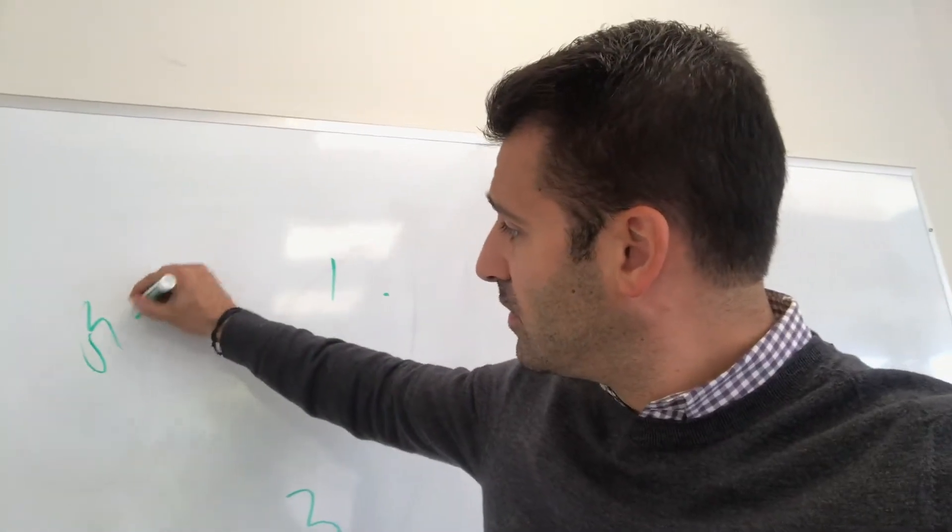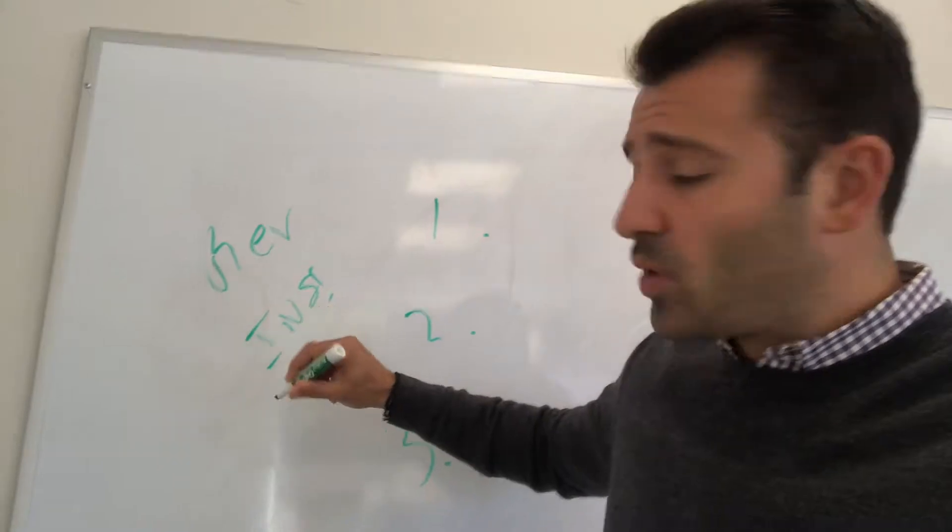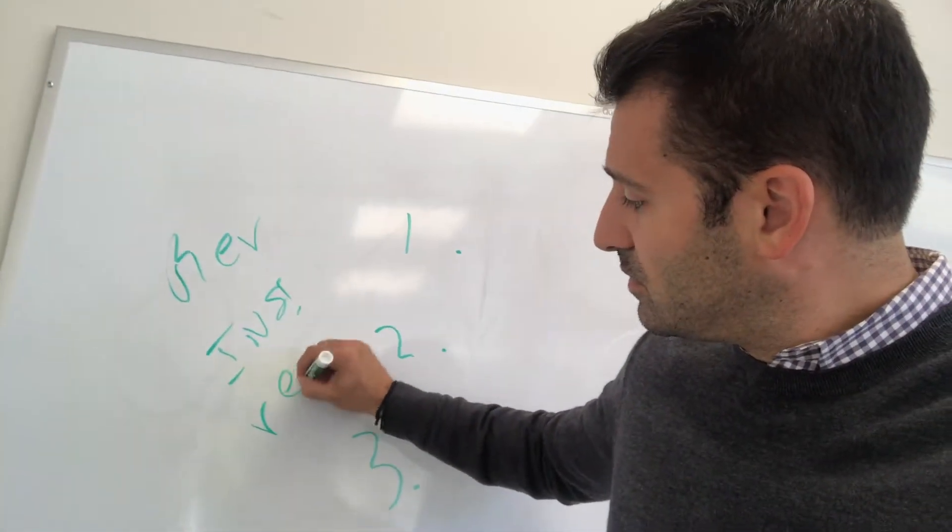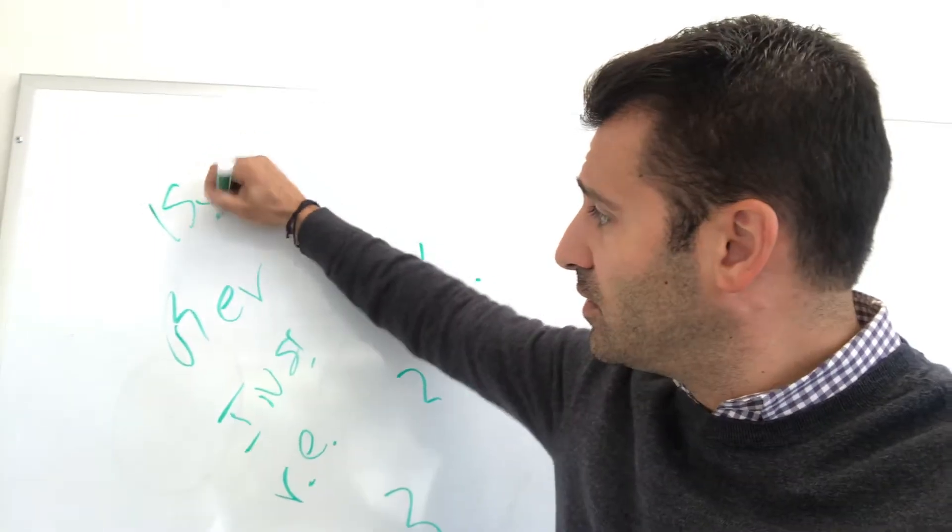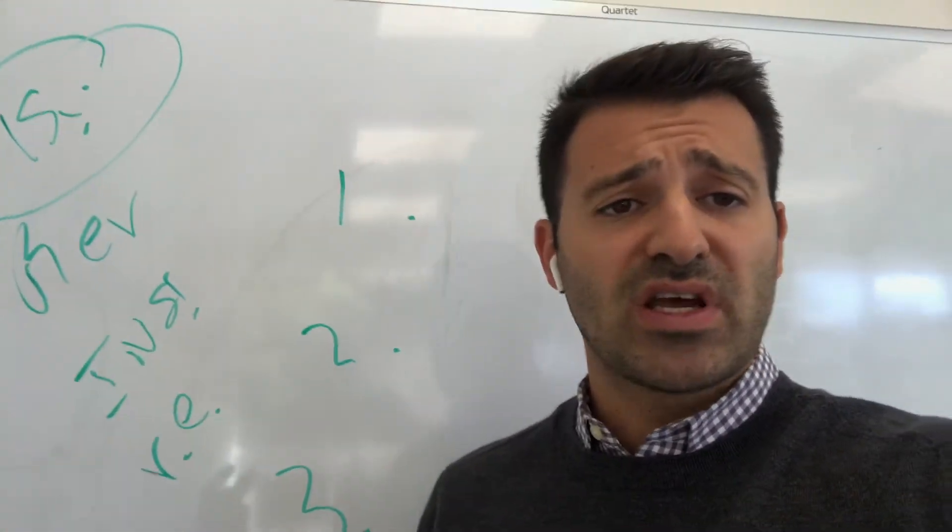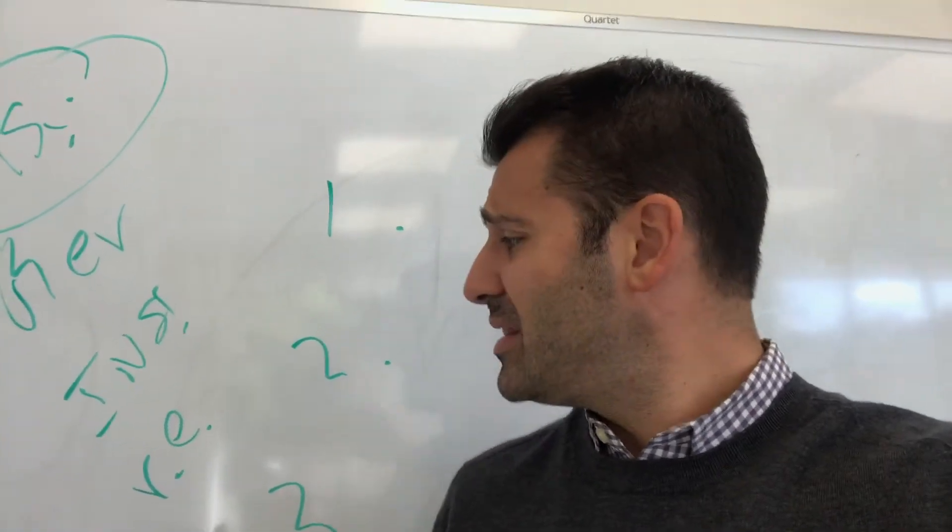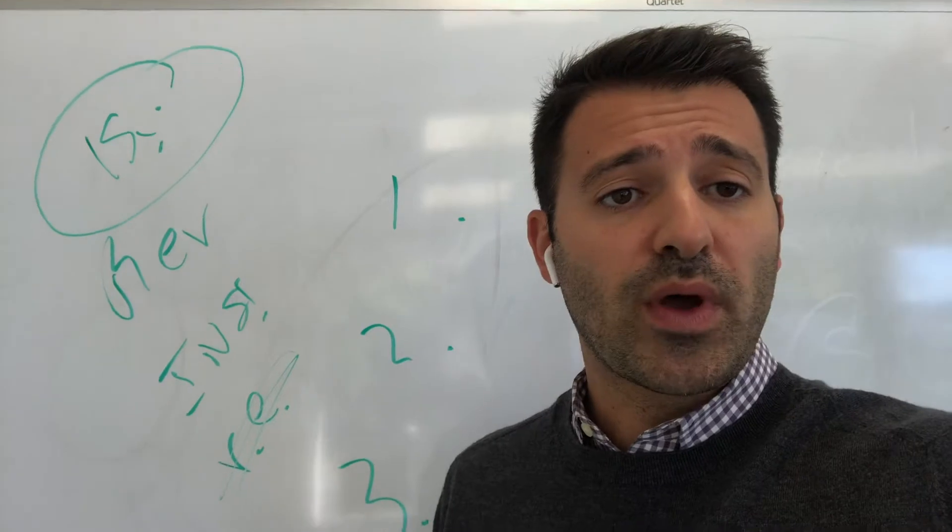We want a good mix of revolving, installment, and then eventually real estate credit. Why? Because 15% of the credit score is types of credit, having a healthy mix of different types of credit. But in this case, to build credit, obviously, we're not going to get real estate credit.